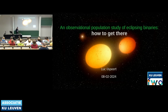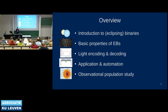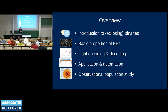Thank you for the introduction. I'm going to talk about how to get to an observational population study of eclipsing binary stars. I'll start with a brief introduction about what eclipsing binaries are and the basic properties I'm looking for. Then I'll talk about how those properties are encoded into the light of eclipsing binaries and how we can approach decoding that light. I'll describe an automated pipeline for analyzing light curves, and finally get to the observational population study.